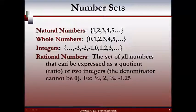After the integers, we have what's called the rational numbers. This is the set of all numbers that can be expressed as a quotient or ratio of two integers, with the one rule being that the denominator cannot be 0. So all of that is a really fancy way of saying that if you can write it as a fraction, then it's a rational number.